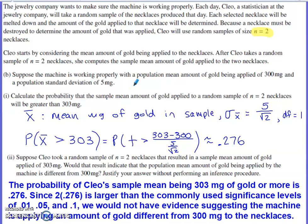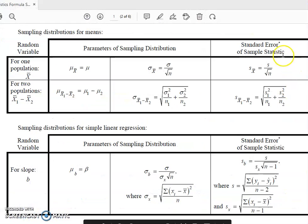The first part of Part B says to calculate the probability that the sample mean amount of gold applied to the random sample of two necklaces is greater than 303. Probability that the sample mean - I read that phrase right there and that kind of triggers, I'm going to have to do something with the sampling distribution for my sample mean. So I defined X bar, my sample mean, to be the mean milligrams of gold in each sample. I am going to have to compute a standard deviation for that sampling distribution. And my standard deviation for that sampling distribution is going to be the standard deviation for the population divided by the square root of the sample size. There's a formula for that right on the AP stats formula sheet. I guess I'm using population values, so technically I'm using this version of it, technically not standard error this time around.